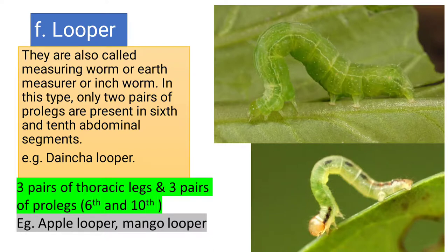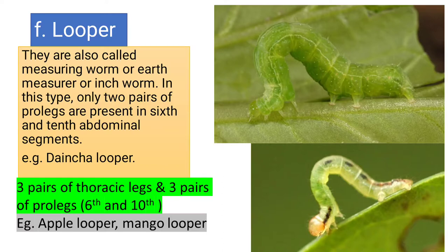Then comes the looper, which makes a complete loop while walking — also called an inchworm because it moves inch by inch. It has only two pairs of pro-legs on the sixth and tenth segments. Mango loopers and apple loopers, which damage mango and apple plants, fall in this category. This concludes all the types of larvae found in different types of insects. Thank you.